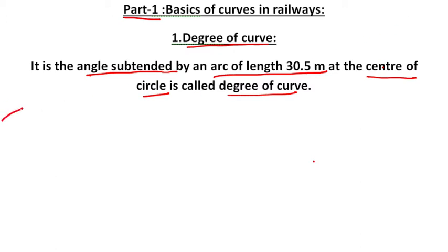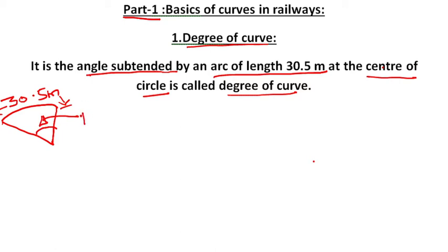So if we have an arc of a circle of 30.5 meters length — from here to here — this is one small arc. Now, whatever this angle is, that angle is called the degree of curve. So the angle subtended by this arc of 30.5 meters length is called the degree of curve.